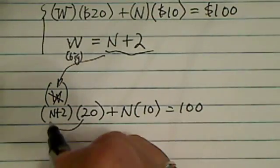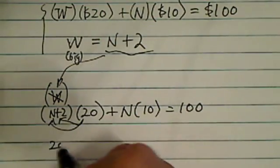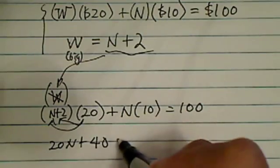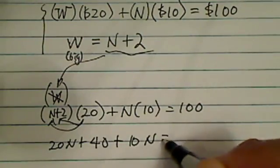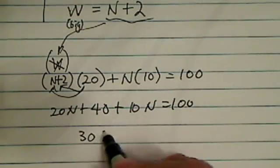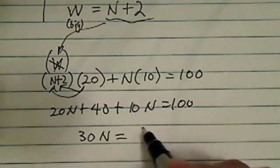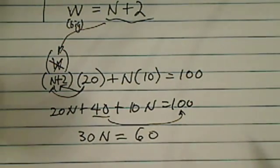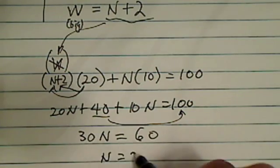And now let's distribute. So you have 20N plus 40 plus 10N equals 100. Combining like terms, you have 30N equals 60. I moved this over. Basically, I subtracted 40 from both sides, so N equals 2.